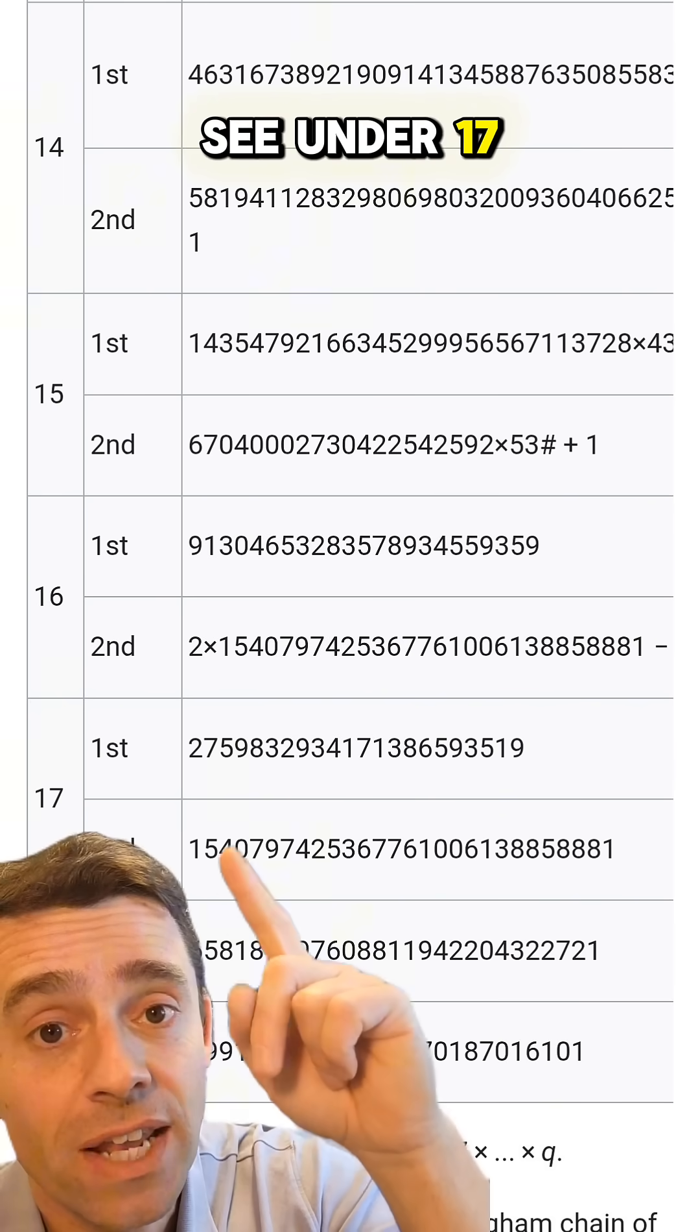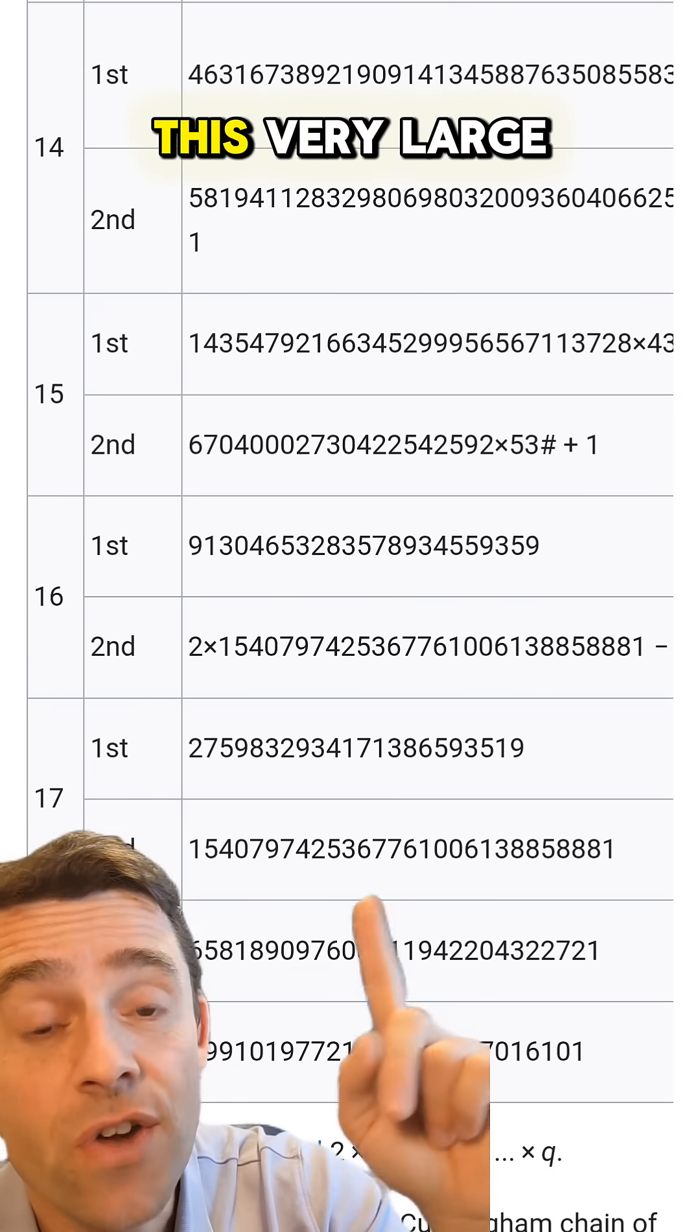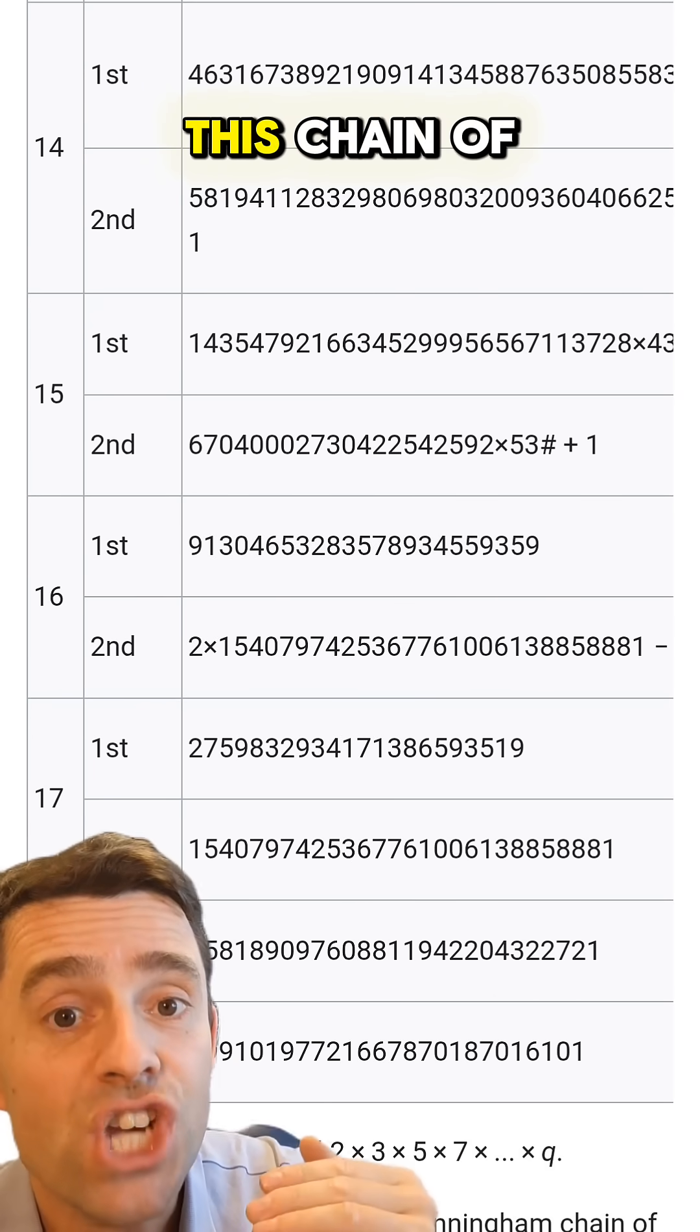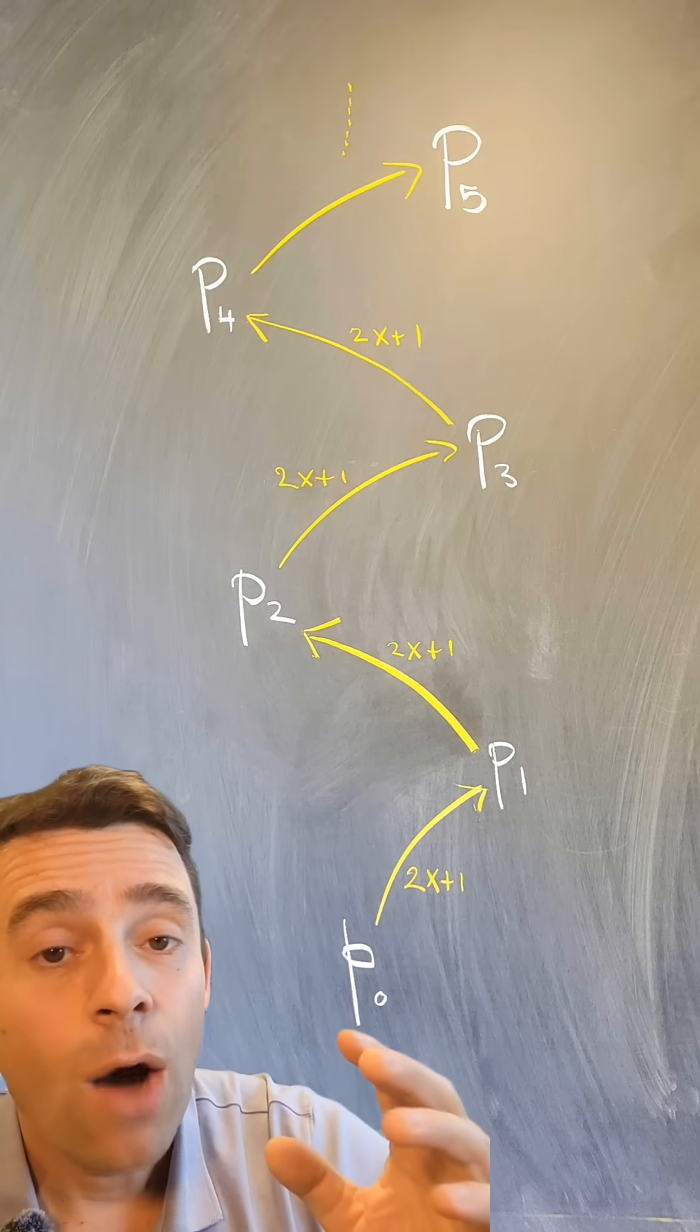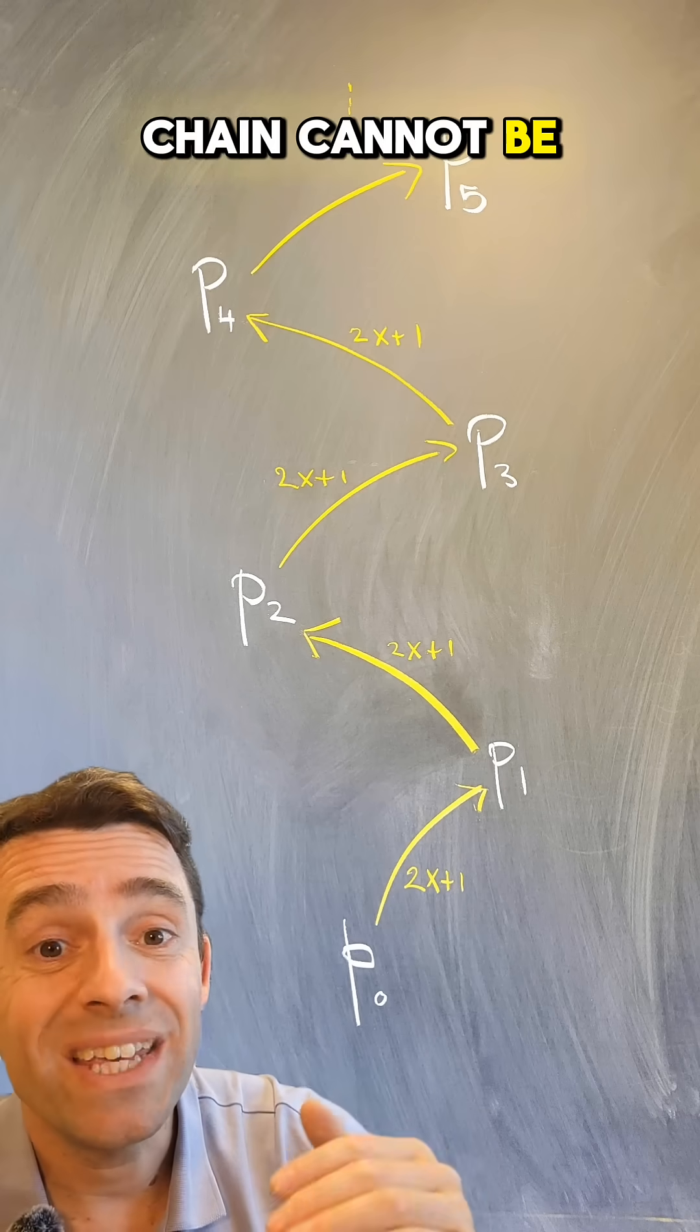And the longest that we have been able to find is of length 17. You can see under 17 and first kind, this very large number that is the first prime in this chain of 17 primes. However, a Cunningham chain cannot be infinite.